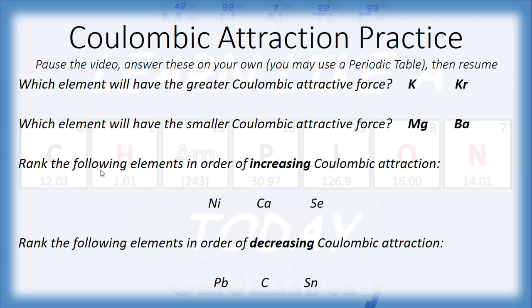The first question asks which element will have the greater Coulombic attractive force: potassium or krypton. Potassium has 19 protons and krypton has 36 protons, and they're both in period four of the periodic table. Since they're in the same row, they have the same number of energy levels and the distance is effectively the same. So we look at number of protons — krypton's 36 versus potassium's 19 — meaning krypton will have the greater Coulombic attractive force.